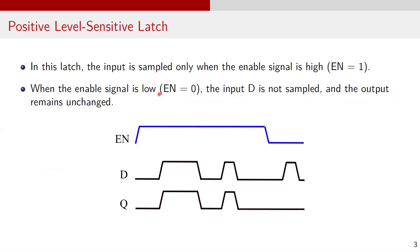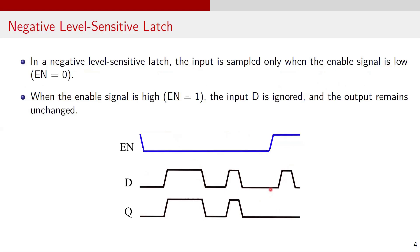In a positive level sensitive latch, the input is sampled only when the enable signal is high, or EN equals 1. When the enable signal is low, the input D is not sampled and the output remains unchanged. As seen in the waveforms, when the enable signal is 1, the output Q follows D. When enable is 0, the output holds its previous value.